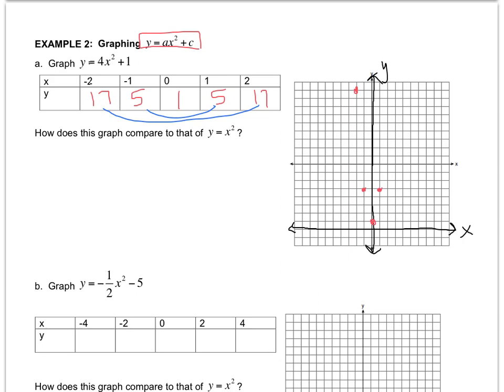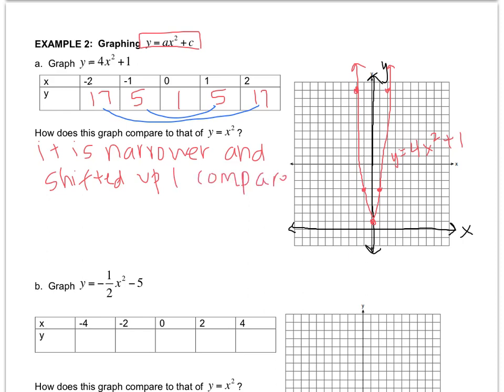And 2, 17. Now this one is super narrow because of that 4 coefficient. So you just do your best to make the best u that you can. Label it. And we have to compare. So it's narrower and shifted up 1 compared to y = x².